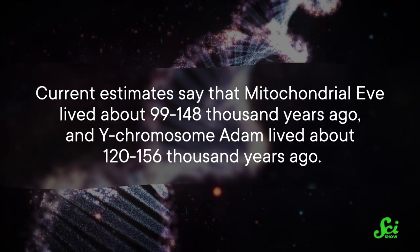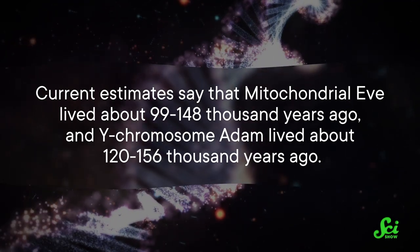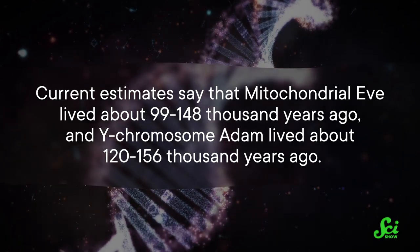These unknown individuals have earned the biblical names mitochondrial Eve and Y chromosome Adam. They didn't necessarily know each other, biblically or otherwise — they might not have even lived at the same time as one another. We can work backwards to figure out roughly when mitochondrial Eve and Y chromosome Adam lived by counting up the mutations in mitochondrial or Y chromosome DNA and multiplying that number by the average rate of mutation, in order to calculate how long it would take for that many mutations to arise. Current estimates say that mitochondrial Eve lived about 99 to 148 thousand years ago, and Y chromosome Adam lived about 120 to 156 thousand years ago.